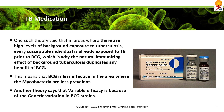One theory to explain BCG's variable efficacy states that in areas with high levels of background exposure to tuberculosis, every susceptible individual is already exposed to TB prior to BCG vaccination. The naturally immunizing effect of background tuberculosis therefore duplicates any benefit of BCG — the body already has the antibodies, making BCG no longer efficient. Another theory attributes the variable efficacy to genetic variation in BCG strains.